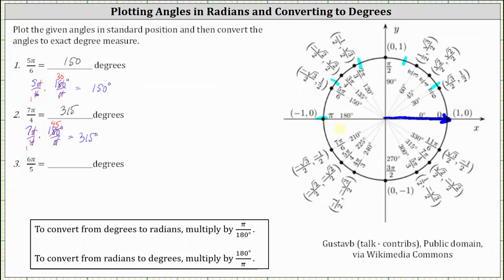Continuing around the circle: six-fifths pi, seven-fifths pi, eight-fifths pi, nine-fifths pi, and ten-fifths pi, or two-pi. Starting along the positive x-axis and rotating six-fifths pi radians counterclockwise, we count one-fifth pi, two-fifths pi, three-fifths pi, four-fifths pi, five-fifths pi, and six-fifths pi. The terminal side of six-fifths pi radians is approximately here.